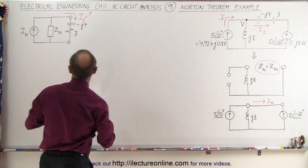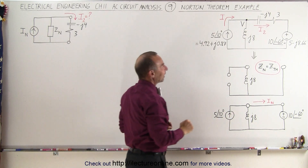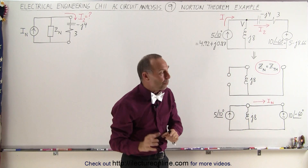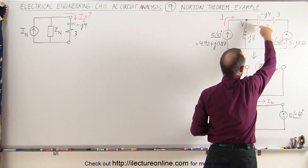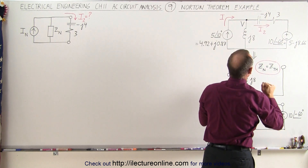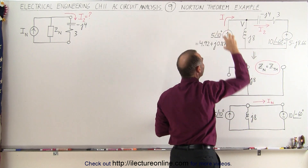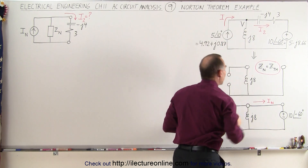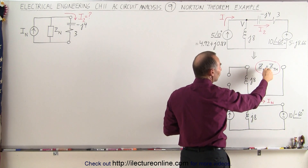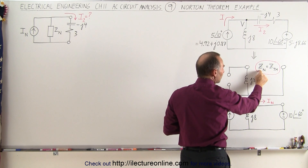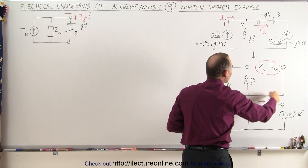So what we need to do is find the Norton impedance and the Norton current. To find the Norton impedance, we find it in the exact same way as the Thevenin impedance. We remove the load impedance so we have an open, replace the source voltage with a short, make the current source an open, and leave everything else alone. The Norton impedance is simply the impedance between the two terminals, which is the impedance of the inductor.